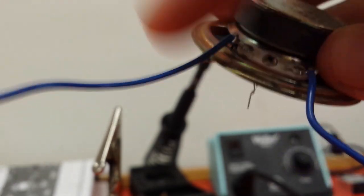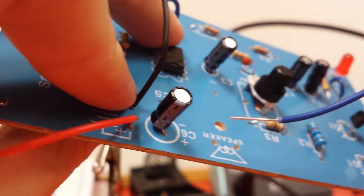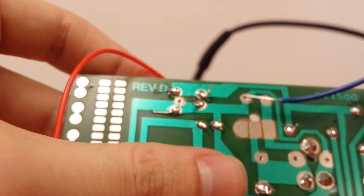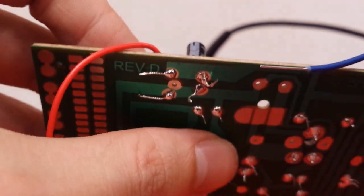Alright, so we have our positive, negative. So this lead has to go to ground. So we're going to go to the other side. We're going to make sure that lead that we chose goes to ground, which is this connection right here.